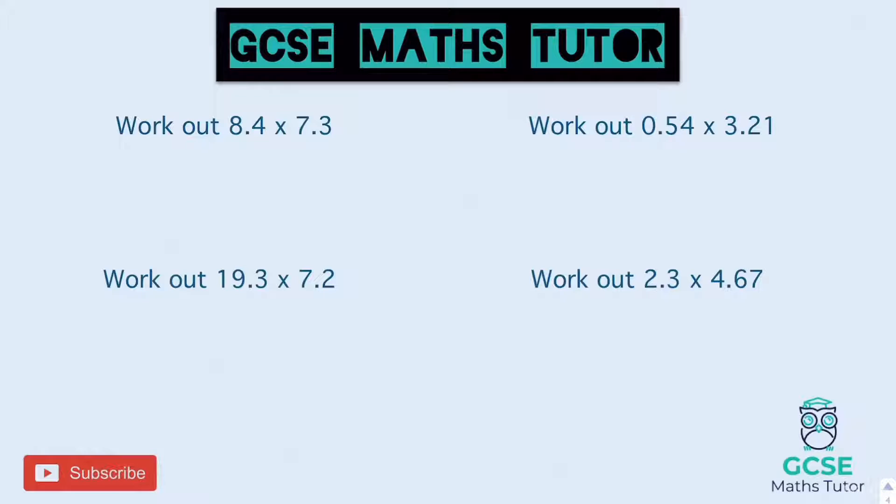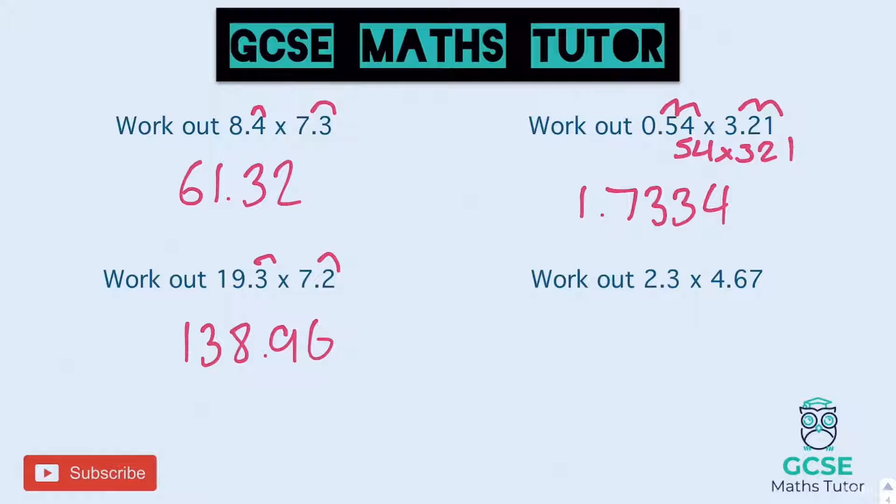Okay, so answers for these. I've not got enough room to draw the little grids in here, and you might be using a different method, so I'm just going to write the answers for you. So for the first one here, we get 61.32. Okay, taking two decimals out there and hopping two back in at the end. For the next one, 19.3 times 7.2. That equals 138.96. Again, we would have taken two decimals out at the start and hop those two back in at the end there. Onto the third one, we've got four jumps on this one. So we're going to be doing 54 times 321 and hopping back in four decimals. So 0.54 times 3.21 is 1.7334, with our four jumps hop back in there. And the last one here, we'd be doing 23 times 467 and hopping them back in. So 2.3 times 4.67 equals 10.741. Okay, so we've got our four answers there.